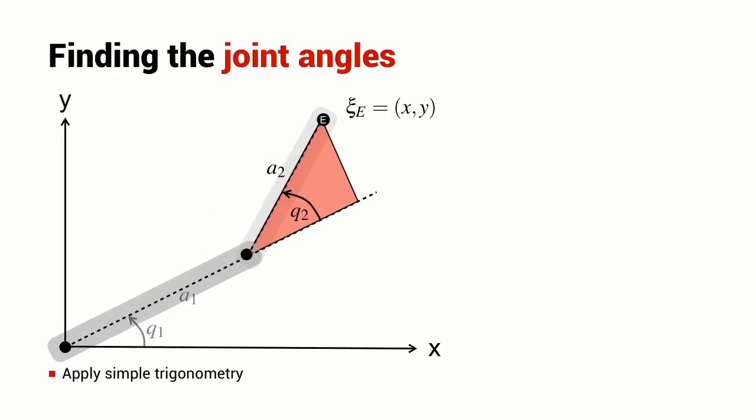Now we're going to draw another red triangle and we're going to apply some simple trigonometry here. If we know Q2, then we know this length and this length of the red triangle. We can write this relationship for the sine of the joint angle Q2.